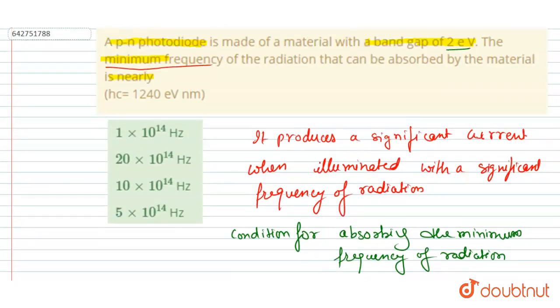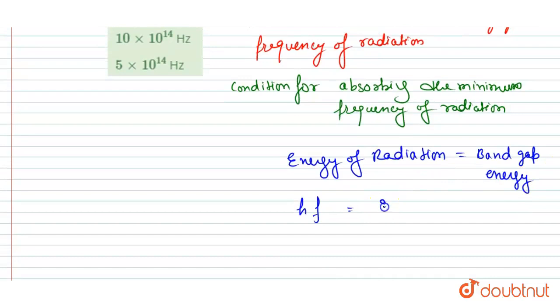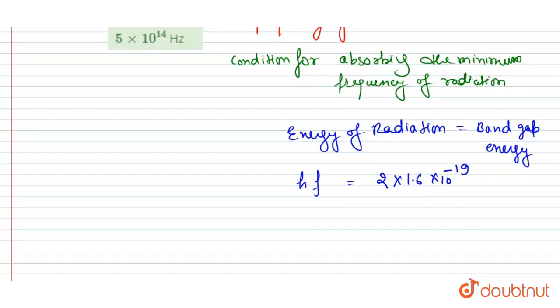...is already given in the question as 2 electron volts. So I will convert it into SI units by multiplying it with charge on electron, that is 1.6 × 10^-19. From here you will get the frequency: 2 × 1.6 × 10^-19 in division. I will write the Planck constant, that is 6.6 × 10^-34.